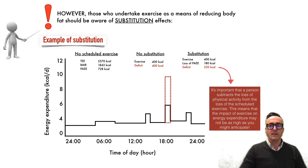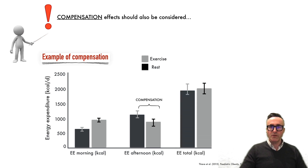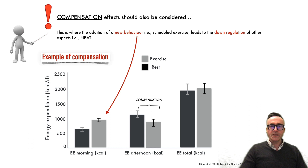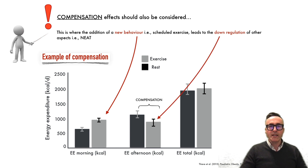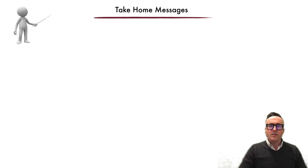It's important that a person subtracts the loss of incidental physical activity from the scheduled exercise, as the impact of exercise on energy expenditure may not be as high as anticipated. Beyond substitution, we also need to factor in compensation effects. The addition of a new behavior such as a scheduled exercise session can lead to the down-regulation of other aspects of metabolism such as NEAT, meaning total energy expenditure can be similar between conditions despite the introduction of scheduled exercise.